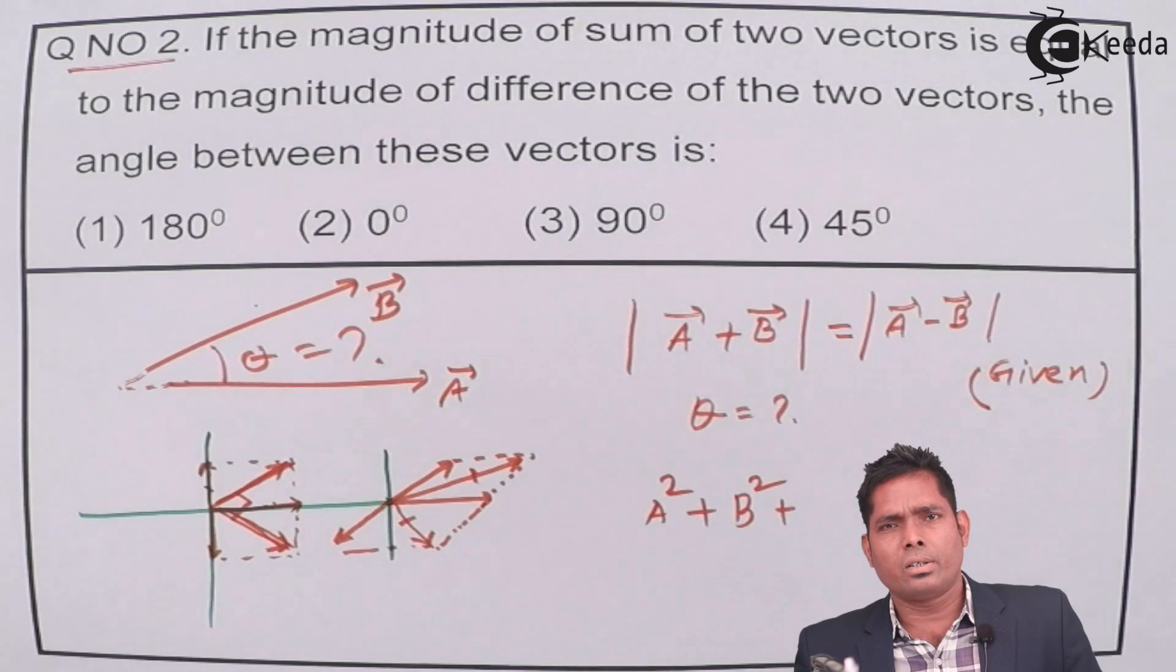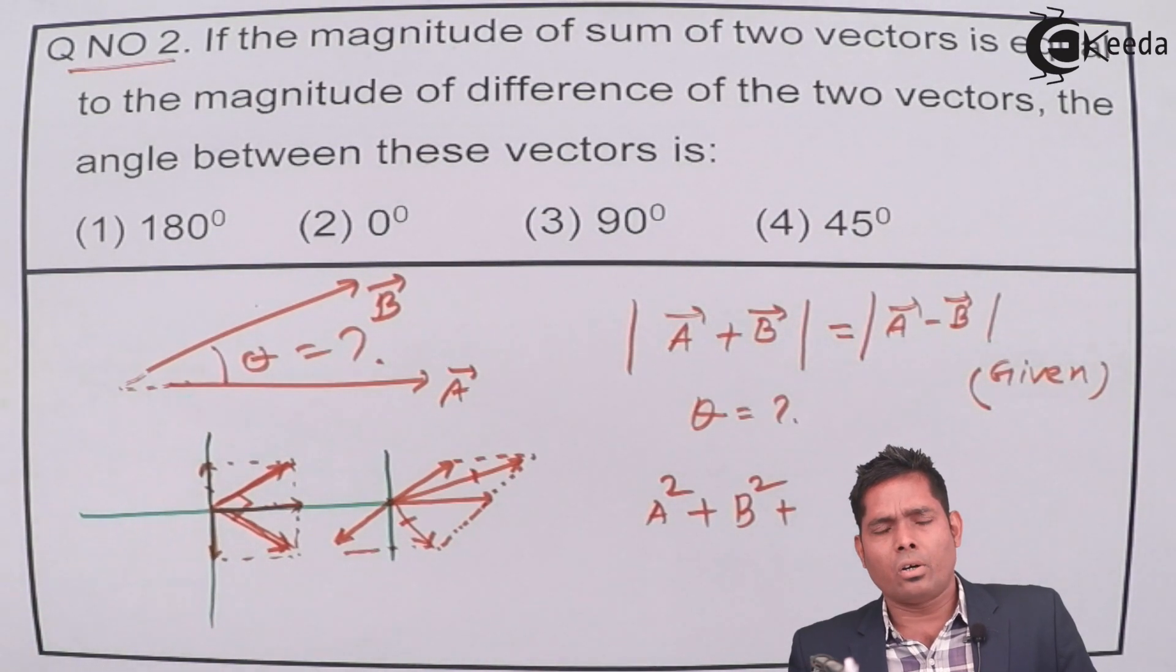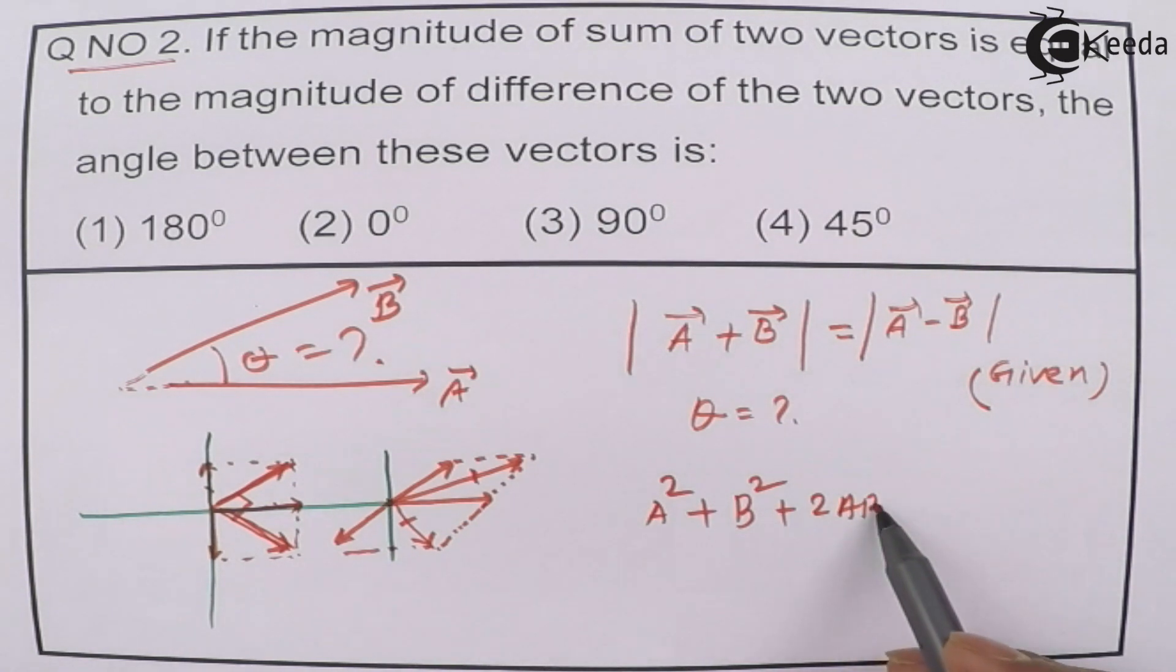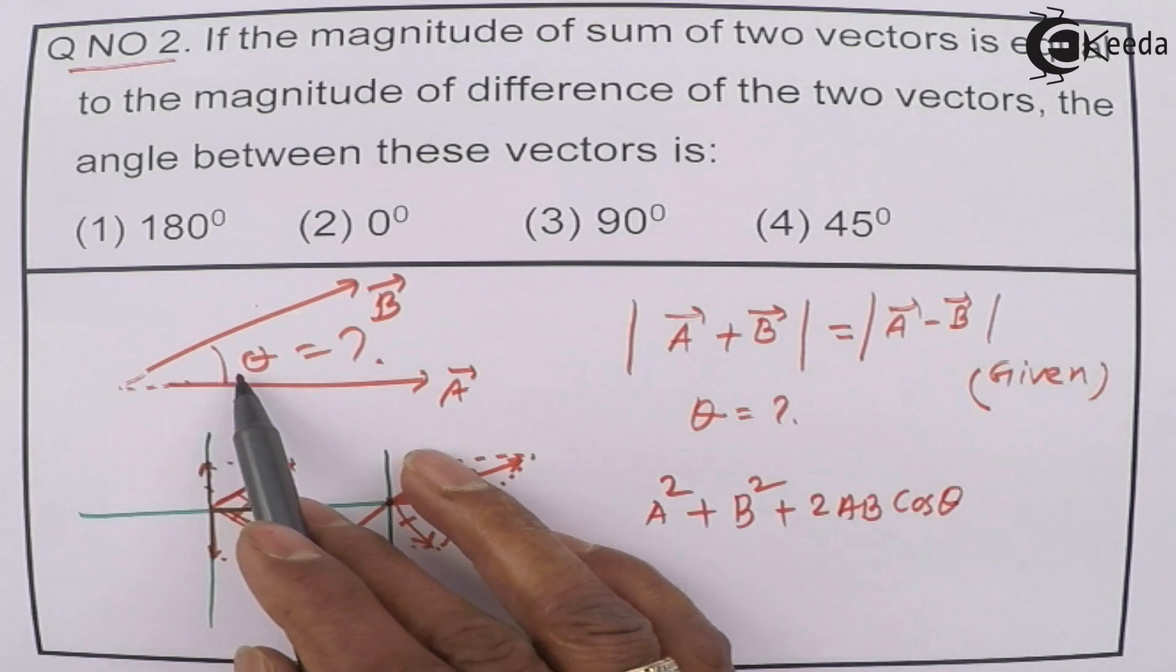Because that is the parallelogram law. The resultant R² is A² plus B² plus 2AB cos θ. So that I write here, A² plus B² plus 2AB cos θ, θ being the angle between the two vectors.